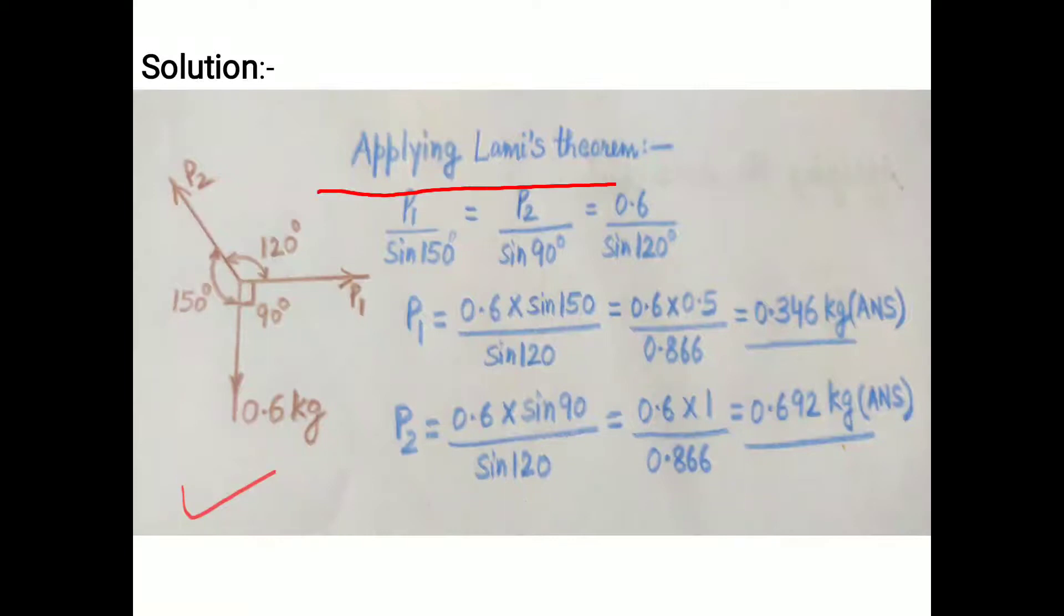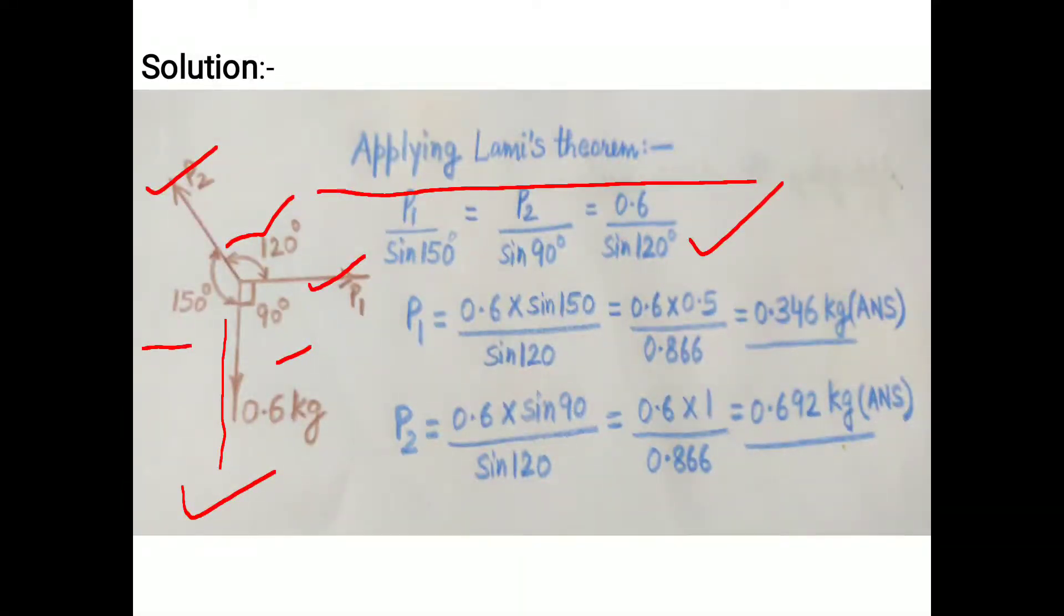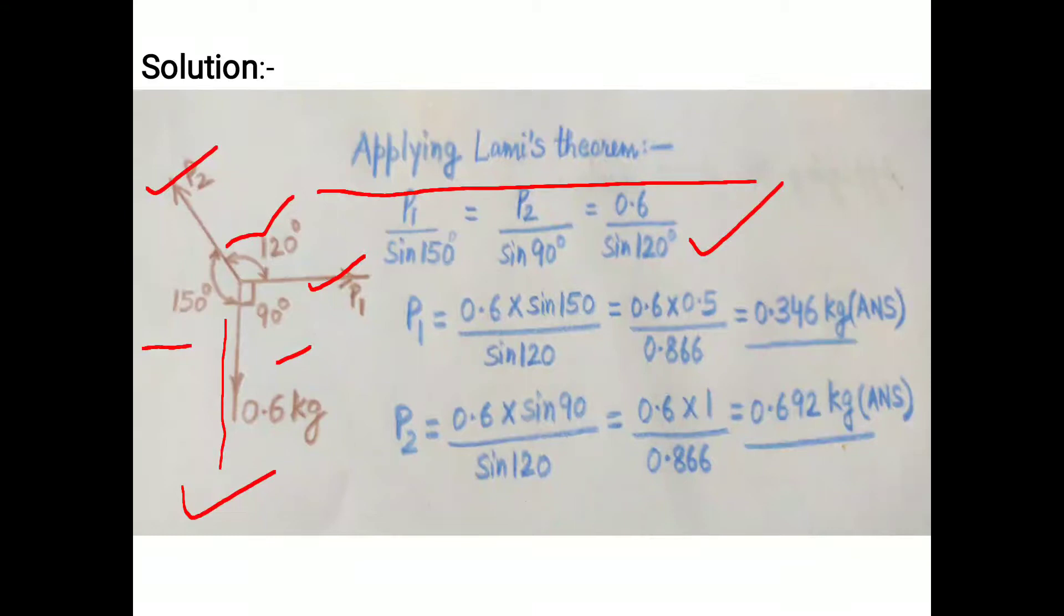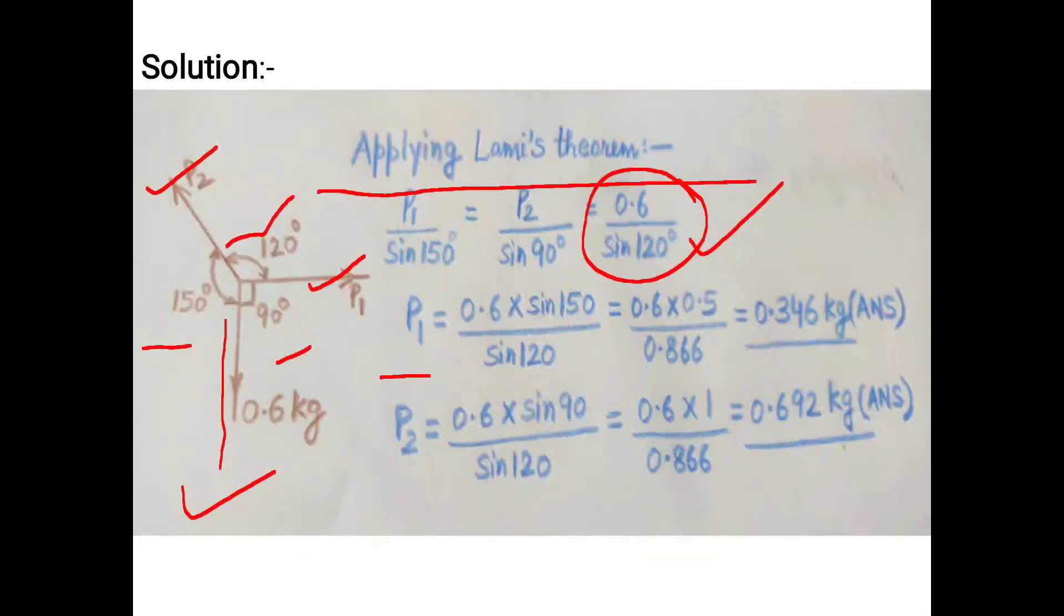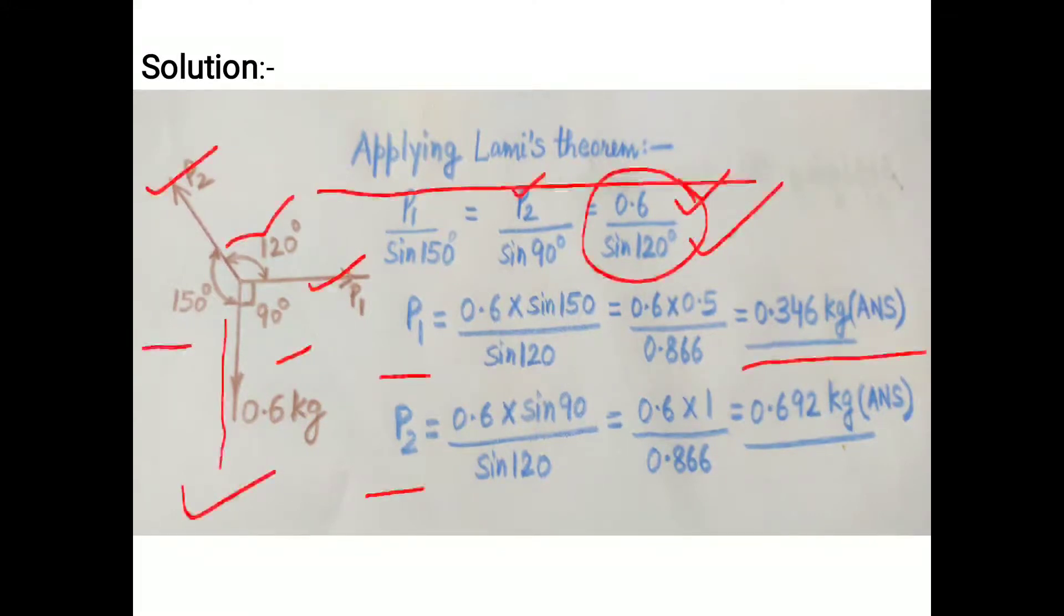Applying Lami's theorem, each force is proportional to the sine of the angle between the other two forces. P1 upon sine 150 equals P2 upon sine 90 equals 0.6 upon sine 120. In this equation, we have two unknowns, P1 and P2. We equate P1 and P2 separately with the third part. When P1 is equated with 0.6 upon sine 120, we get the answer for P1. When P2 is equated with 0.6, we get the second answer. This solves the problem.